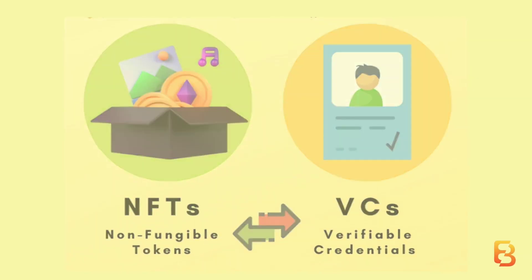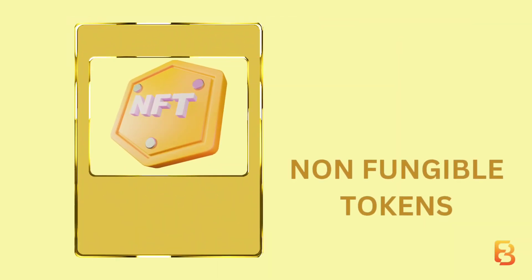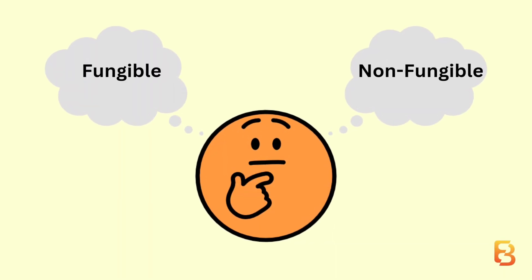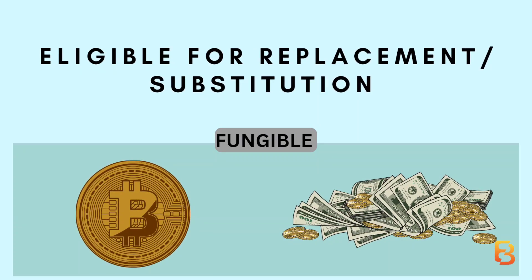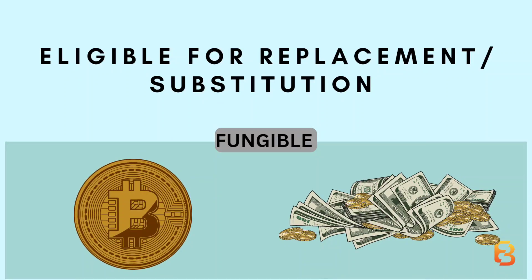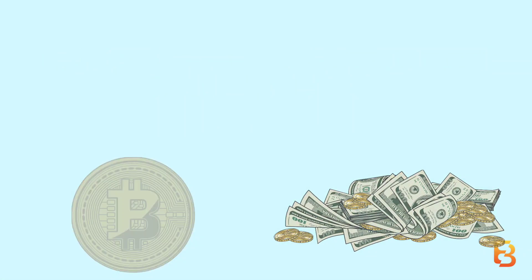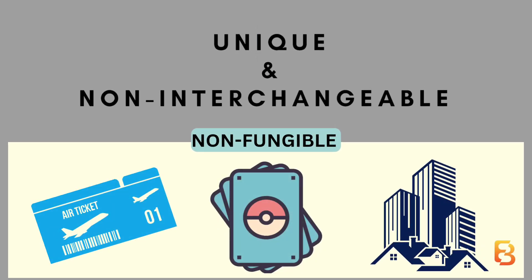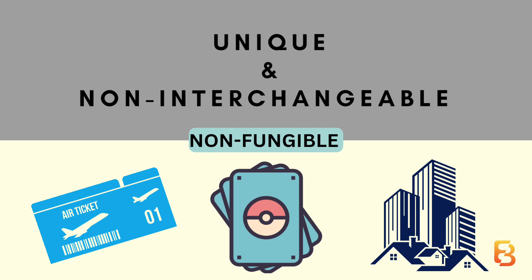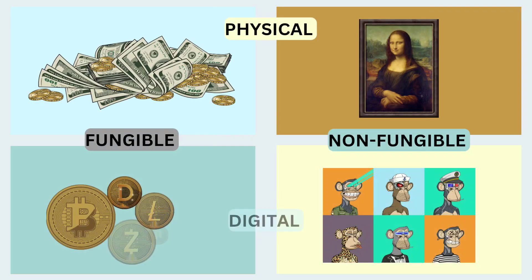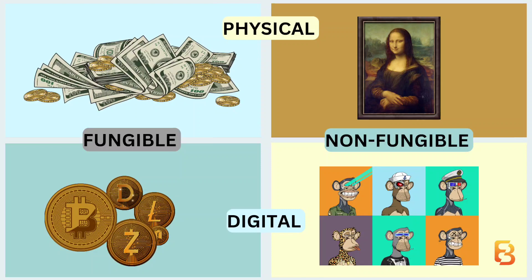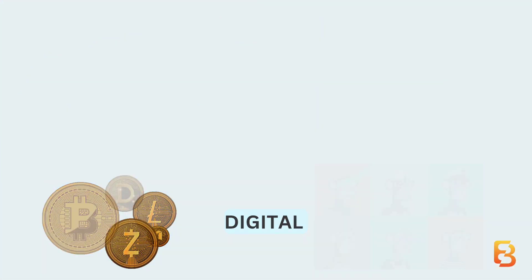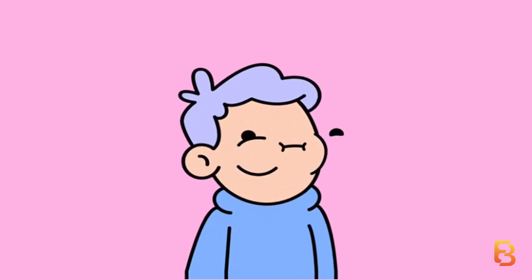NFTs stand for non-fungible tokens, but what are fungible and non-fungible items? Fungible items are eligible for replacement or substitution — like dollar bills or Bitcoin — whereas non-fungible items like airline tickets, trading cards, and real estate are unique and not interchangeable. In short, a non-fungible item cannot be equal to another item.